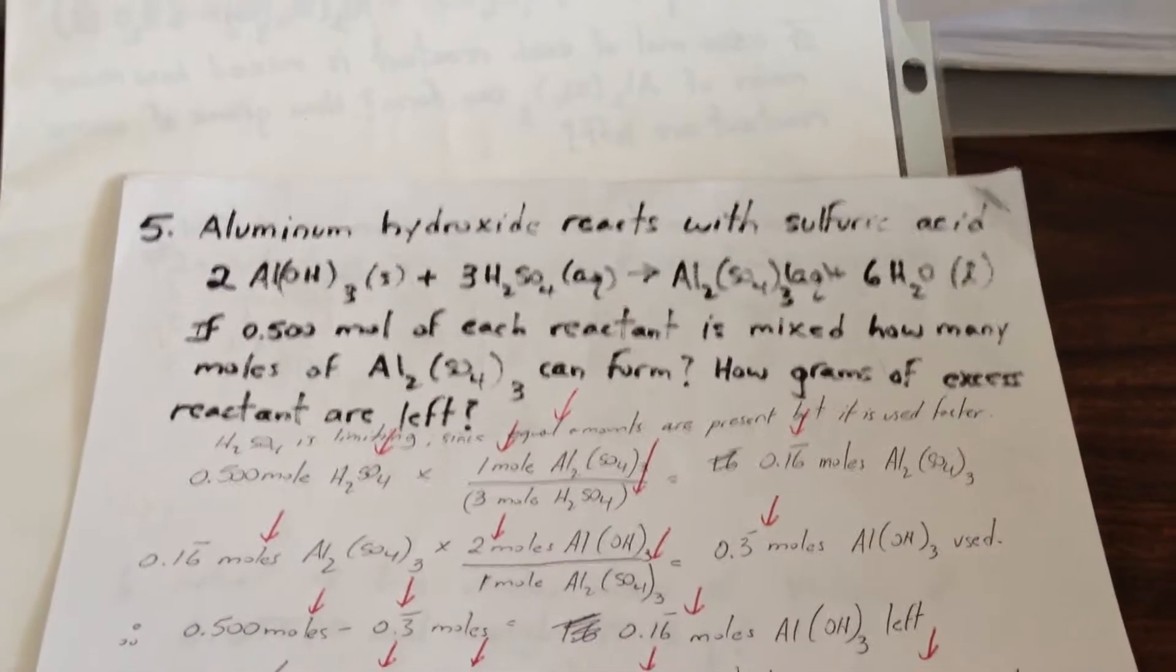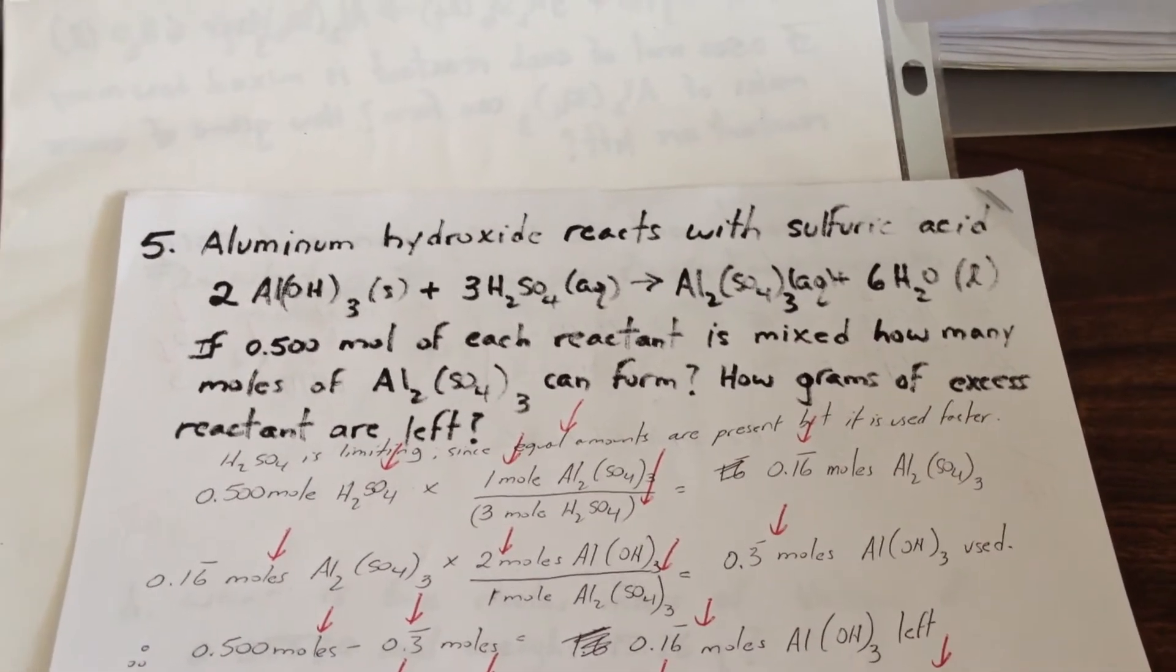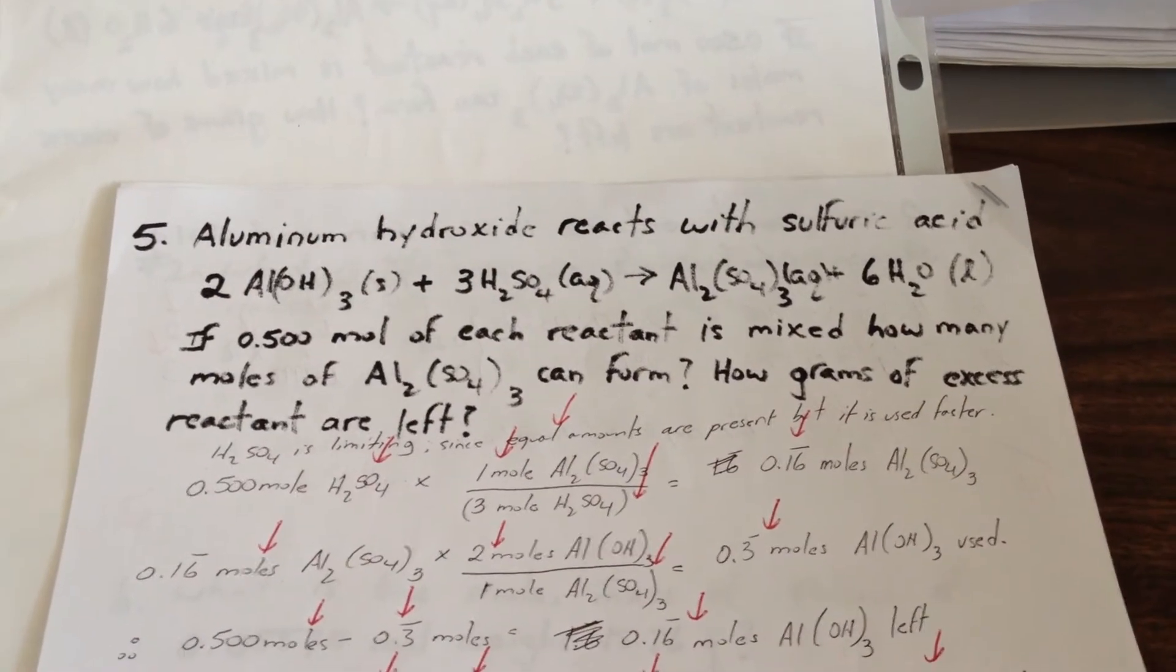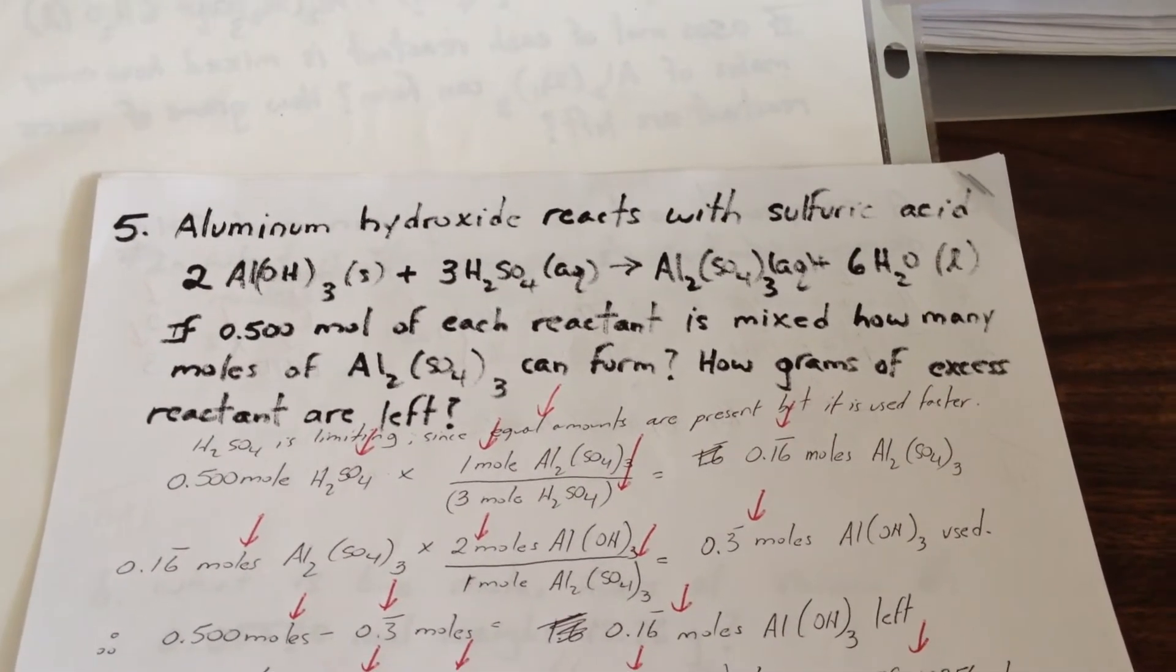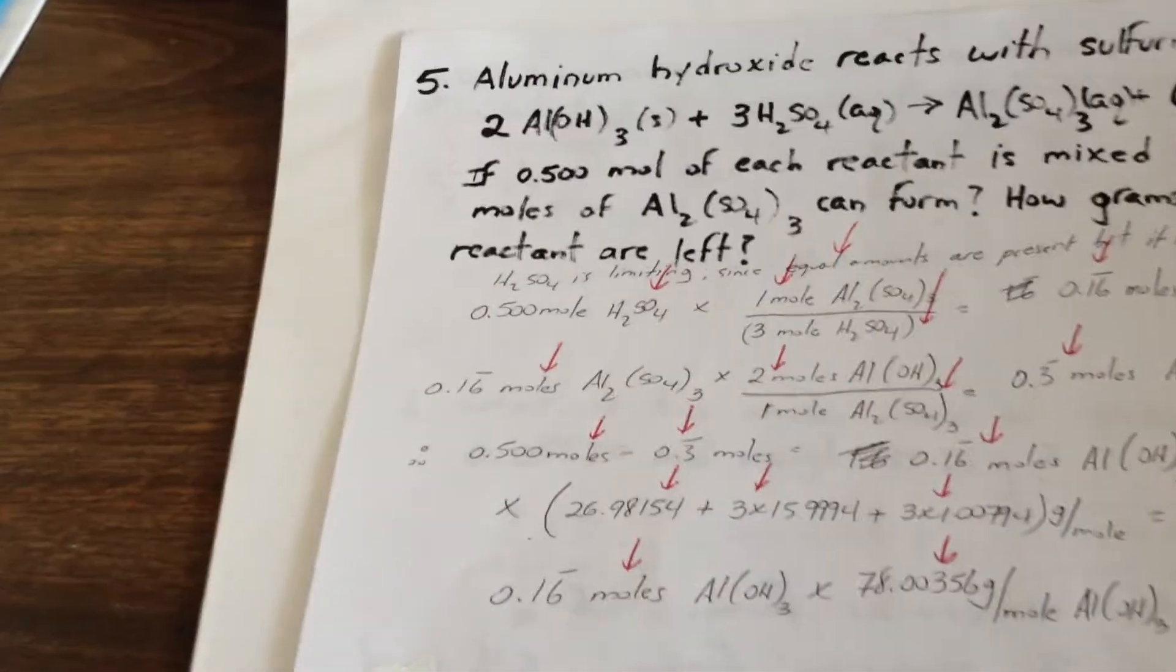Fifth question. Aluminum hydroxide reacts with sulfuric acid according to the following balanced equation. If 0.5 moles of each reactant is mixed, how many moles of aluminum sulfate can form? How many grams of excess reactant are left over? So the first step is to determine which one of the two reactants,